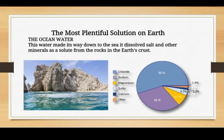Over time, slowly and gradually, these minerals and salt get dissolved in the sea water, and that is why the taste of sea water is salty. A pie chart shows the composition of sea water: 55% chloride, 31% sodium, 7.7% magnesium, along with sulfur, calcium, and other solutes.